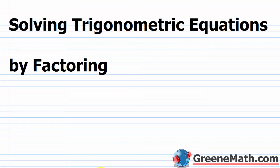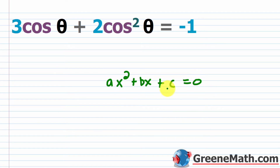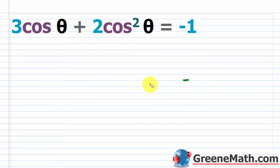In this lesson, we want to talk about solving trigonometric equations by factoring. We already talked about solving basic equations using linear methods. Now we're going to factor. We have 3 times cosine theta plus 2 times cosine squared theta equals negative 1. If you see a squared term, think about factoring right away.